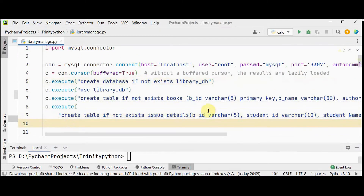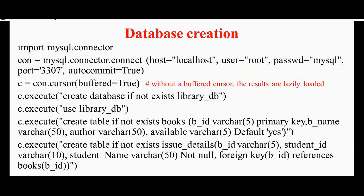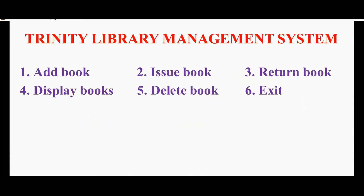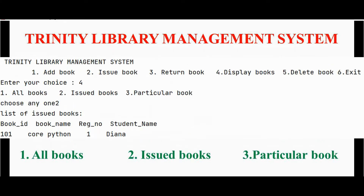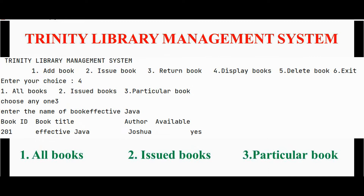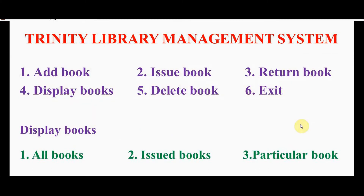Next, let's see the operations that can be performed in this library management system. In this Trinity Library Management System, all operations are performed by the admin. The admin can: add a book, issue a book to a student, maintain a list of returned books, display books, and delete a book. Option six is to exit. Under display books there are three sub-options: display all books, display only issued books, or search for a particular book.